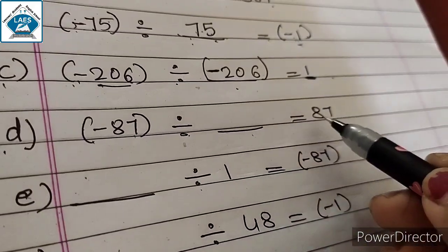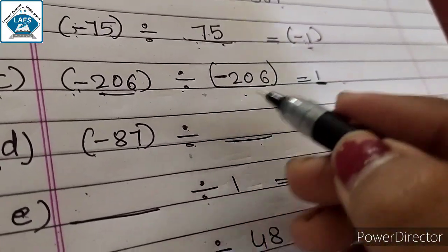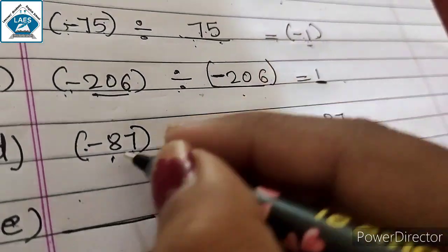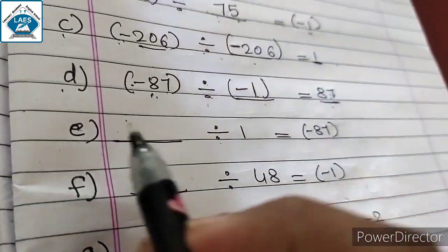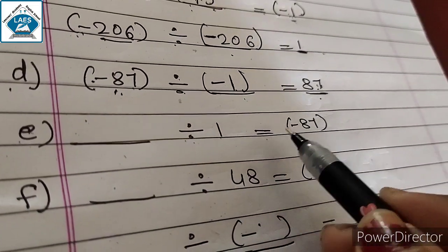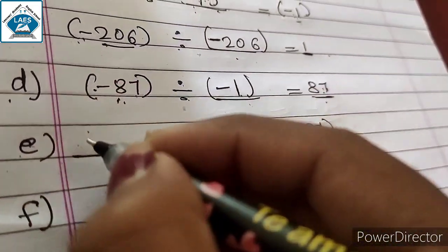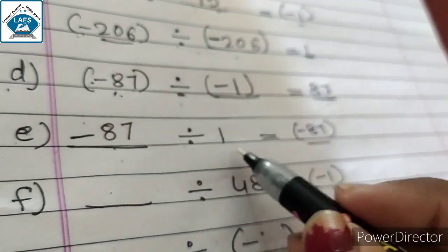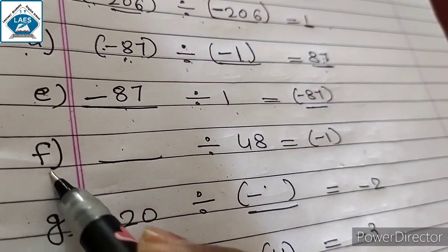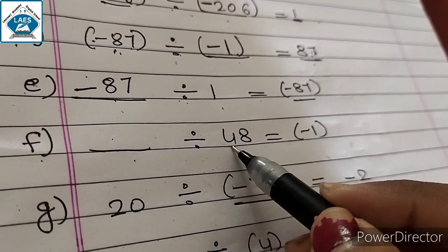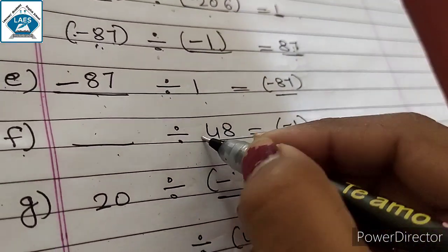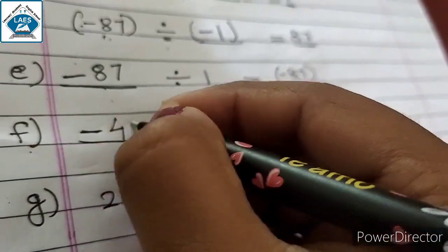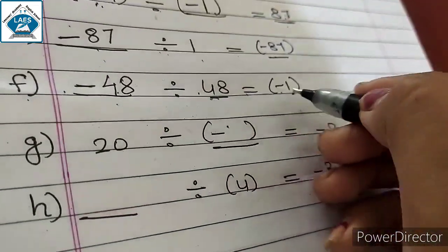Part D: minus 87 divided by ___ equals 87. We need the same integer 87 as answer, so divide by 1. But there is a minus sign on the numerator and the result is positive, so दोनों integers की sign minus होगी: answer is minus 1. Part E: ___ divided by 1 equals minus 87. Dividing by 1 gives the same integer, so the blank is minus 87. Part F: ___ divided by 48 equals minus 1. Since 48 is positive and answer is negative, the blank is negative: minus 48 divided by 48 gives minus 1.